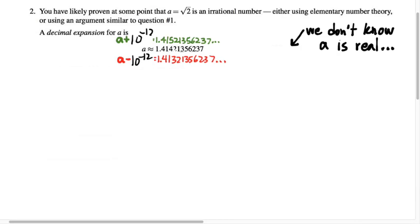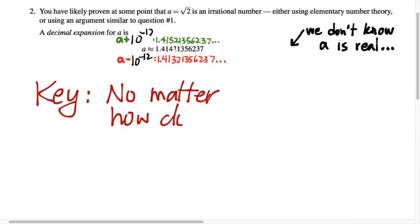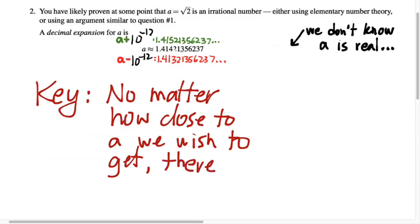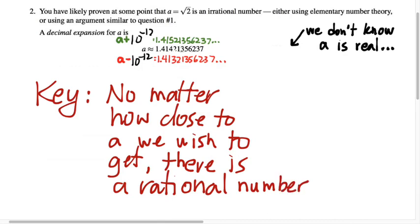So the key idea here, and this is where we'll wrap things up for today, the key is that no matter how close to A that we wish to get, there is a rational number there. So we can approximate A by a rational number to what we call arbitrary precision. However close we want to get, we can find an A that gets us that close.